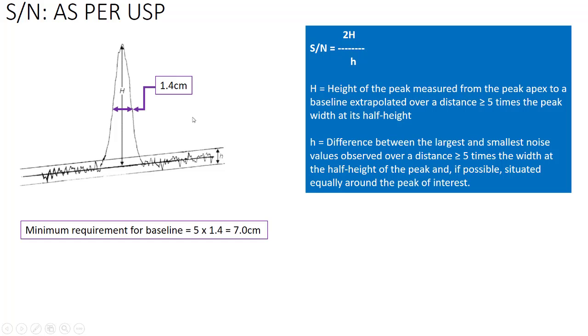Let us assume that the width at the peak height is 1.4 cm. So what will be the requirement of the baseline? The minimum baseline should be around 7 cm. The extrapolation of the baseline around the peak should be around 7 cm. Preferably, we will take 50% of the baseline towards the left side of the peak and 50% towards the right side of the peak. So this is 3.5 cm to the left and 3.5 cm to the right of the peak. So this is the distance of the baseline you must consider for calculation of the noise.